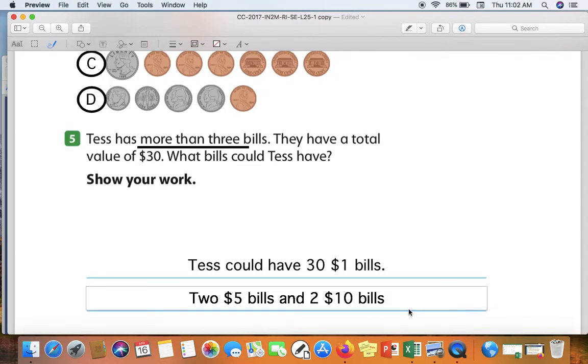There are several other ways that you could answer this question as well. She could have two ten-dollar bills and ten one-dollar bills. Lots of different ways you could answer this question. As long as she has more than three bills, and the total value of those bills equals thirty dollars.